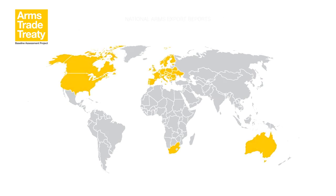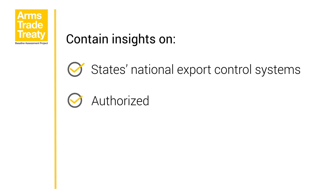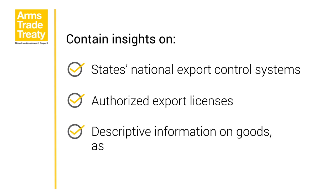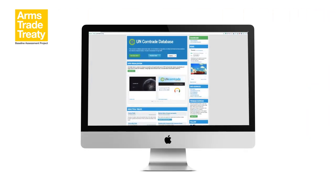In addition to regional and multilateral initiatives, some states also provide national reports on arms exports, many of which are publicly available. These reports vary considerably in how much information states provide, as well as in the level of substantive detail offered. National reports tend to contain insights on states' national export control systems and authorised export licences. Some states may also choose to provide descriptive information on the goods, as well as the end user or users. In compiling these reports, states use a variety of sources of information, with some states using customs data from the United Nations Commodity Trade Statistics Database, also referred to as Comtrade.